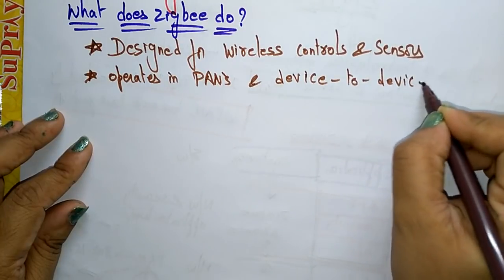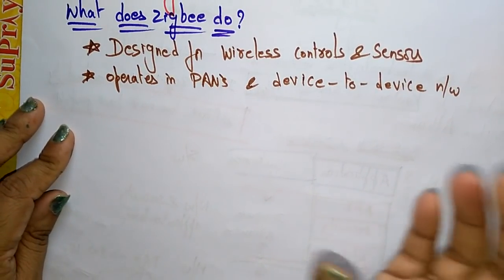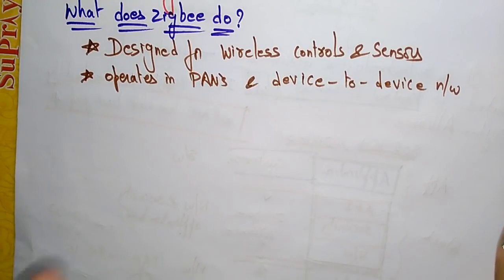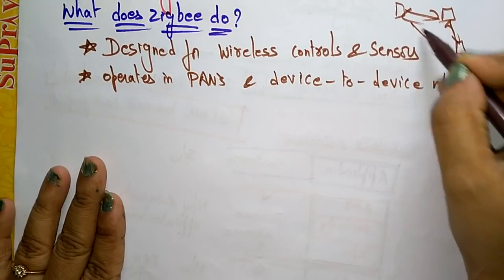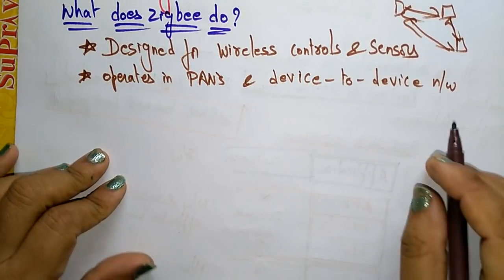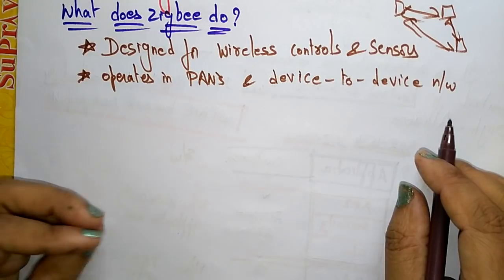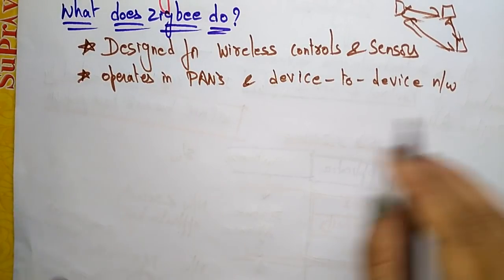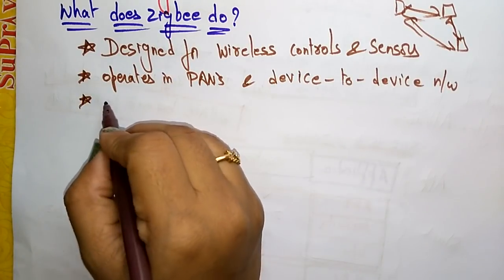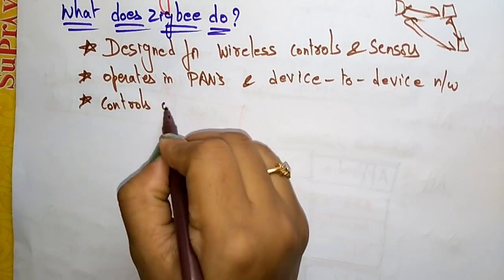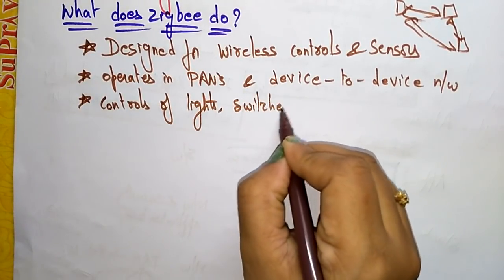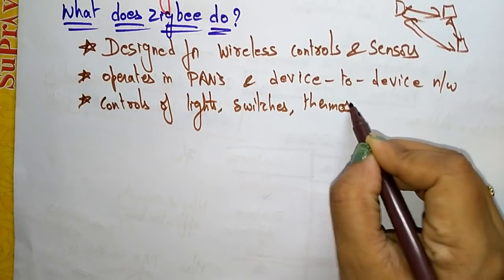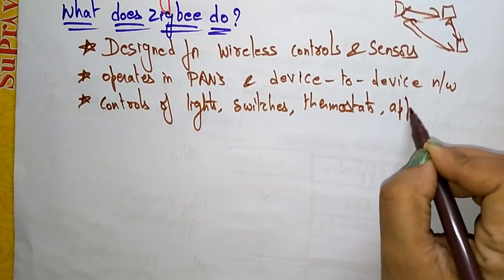It operates in a personal area network and it should be a device-to-device network. Different devices will be there in the house, and ZigBee will work on device to device. The connectivity is between small packet devices, and it controls lights, switches, thermostats, and appliances.